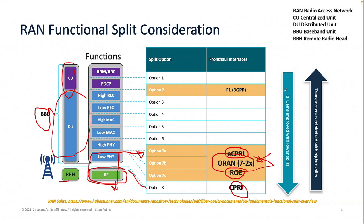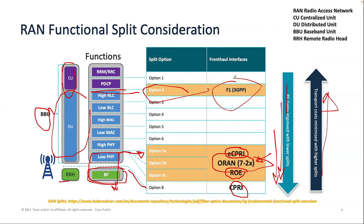From a stack perspective, as you go down the stack it's good for radio but expensive for transport. As you go up the stack, transport becomes cheaper — that's the main takeaway. And as you go down, latencies are more strict. Another split people talk about a lot is mid-haul, called option 2 or F1 as defined by 3GPP. This will be one of the most common deployments in the world. Anything above the CU we call backhaul.